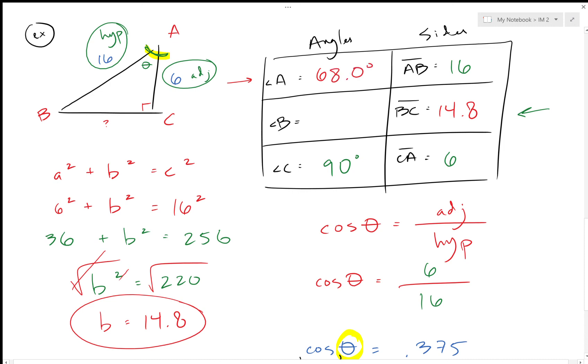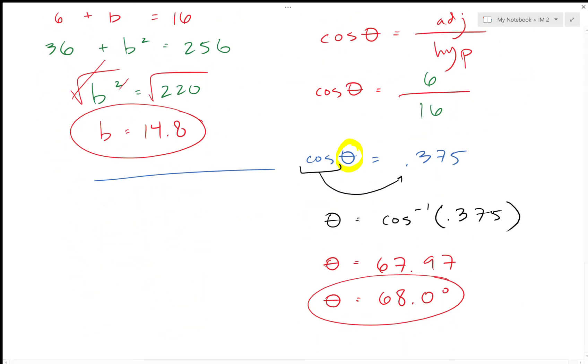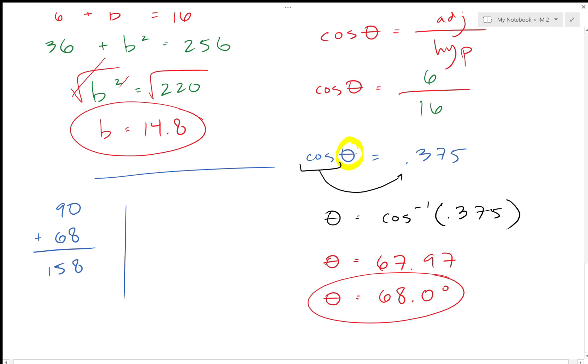I could use trig again to find angle B, or I know that if I have two angles of a triangle I can find the third one by using the 180 rule. So right now I have the 90 and the 68, so adding those together gives me 158, and subtracting that number from 180.